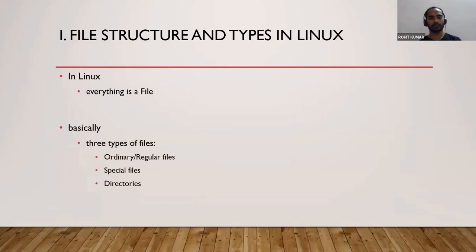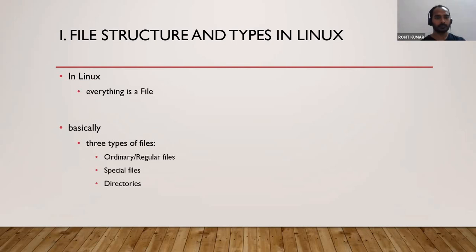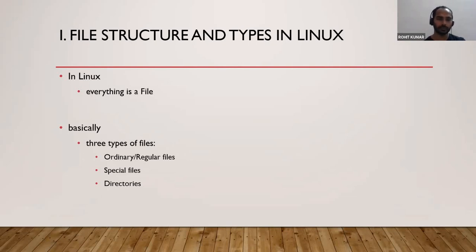Starting with file structure and types, we are studying these things with respect to Linux. Linux is chosen because of its open-source nature and availability at no cost. It's available in so many forms that you can use it in a variety of environments. In Linux, every object is considered a kind of file, stored in a file-sort-of structure inside the system. Directories are also considered a kind of special file.